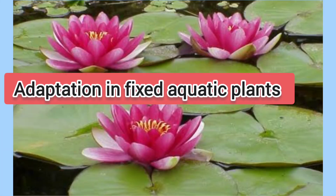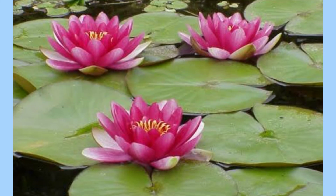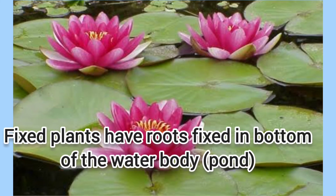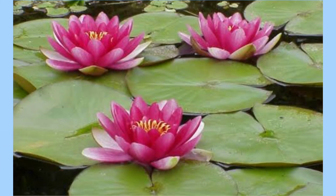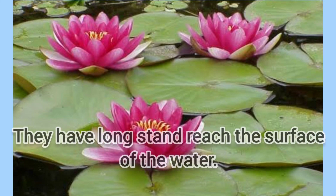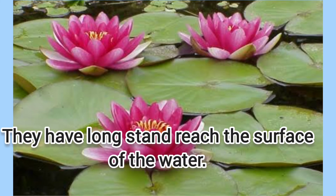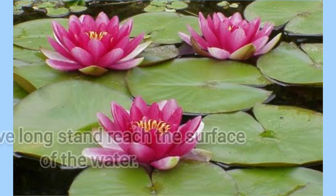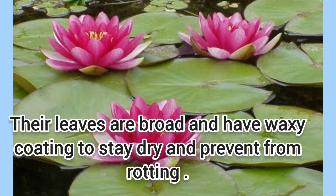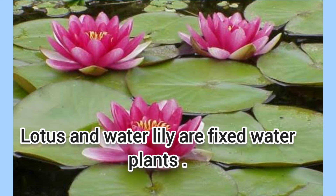Fixed plants have roots fixed at the bottom of the water body. They have long stems to reach the surface of the water. Their leaves are broad and have a waxy coating to stay dry and prevent rotting. Lotus and Water Lily are examples of fixed water plants.